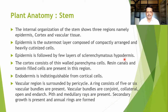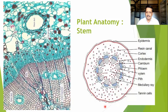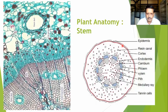The epidermis is followed by a few layers of sclerenchymatous hypodermis. The outermost layer is the epidermis, which is highly cutinized, and it is followed by the multi-layer sclerenchymatous hypodermis. The cortex consists of thin-walled parenchymatous cells, resin canals, and tannin-filled cells present in this region. The cortical zone is made up of parenchymatous cells.